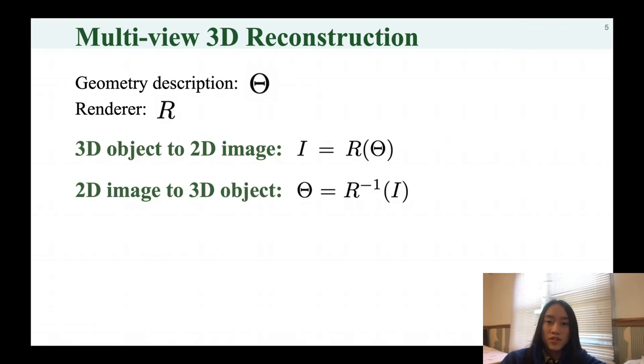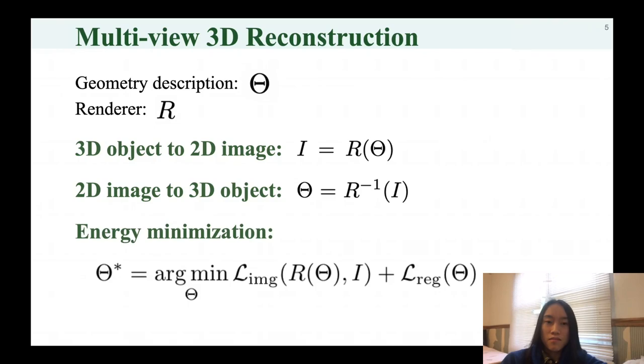Given a desired target image I, our objective is to get the set of parameters theta that produces the target image. The rendering process itself is not invertible. So instead of solving the inverse rendering problem directly, we can formulate it as an energy minimization problem.